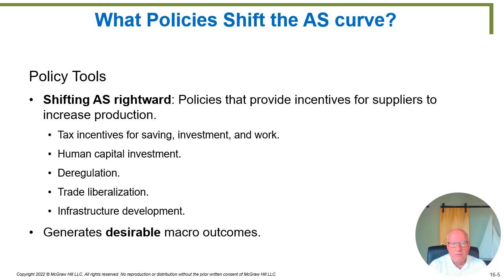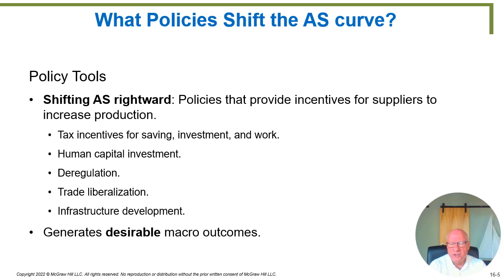Trade liberalization refers to removing trade barriers. Trade barriers are essentially a self-imposed restriction on your own economy — it's like driving a car with the emergency brake on. So trade restrictions can damage the economy's ability to improve, and removing them can accelerate growth, shifting the aggregate supply curve to the right. And certainly last but not least, infrastructure development refers to things like roads, bridges, dams, power lines, and ports for shipping.